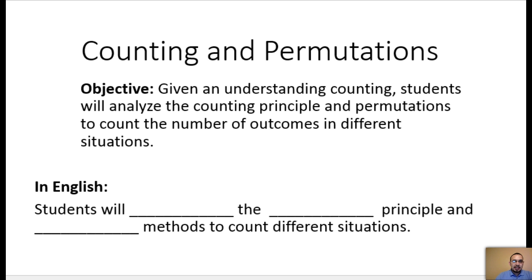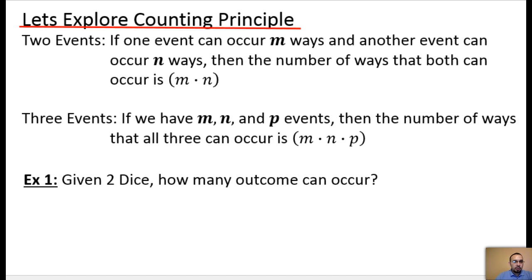So let's analyze the counting principle first. In class we warmed up with two dice. We looked at two dice and said, how many outcomes can we get from one die? We came up with a conclusion of six. There are six sides to a die, so we can get a one, two, three, four, five, or a six. Given that we had two dice, how many outcomes did we have? We said six for each, and when you built the chart, we had 36 different combinations or 36 different outcomes. So this counting principle allows us to figure out how many outcomes are in each event.